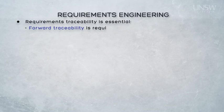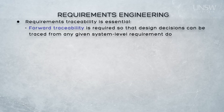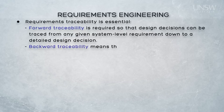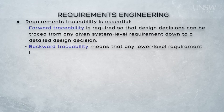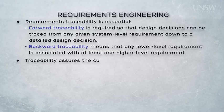As part of requirements engineering, requirements traceability is essential. We have two sorts of traceability, and both allow us to trace design decisions from any level to any other level. Design decisions traced from the system level down to the detailed design decision we call forward traceability, and any individual design decision must be able to be justified by being associated with at least one high-level requirement — we call that backward traceability.